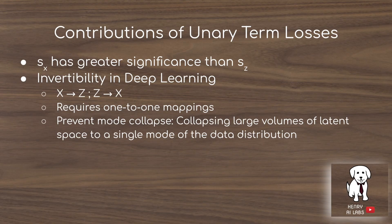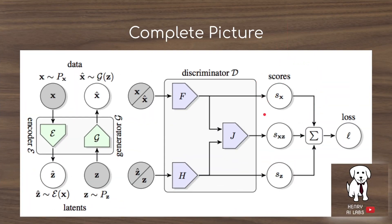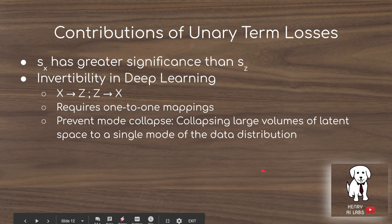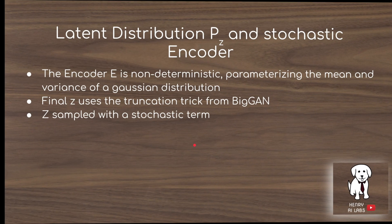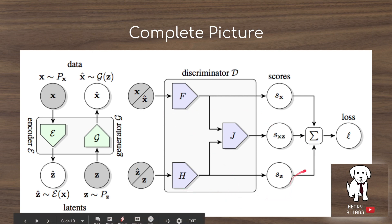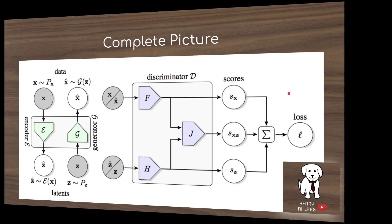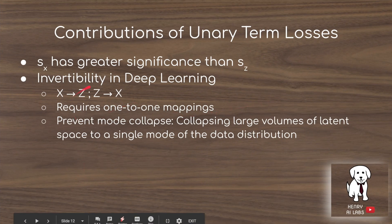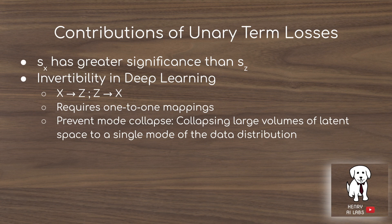They also test the importance of the unary loss scores, finding that the unary loss on X has much greater significance than on Z. This is intuitive because the image contains more information than the latent code. It's also interesting to think about invertibility in deep learning — the X-to-Z and Z-to-X mapping needs to be a one-to-one mapping to go back and forth, and this technique may help prevent mode collapse by pushing data to cover different modes.